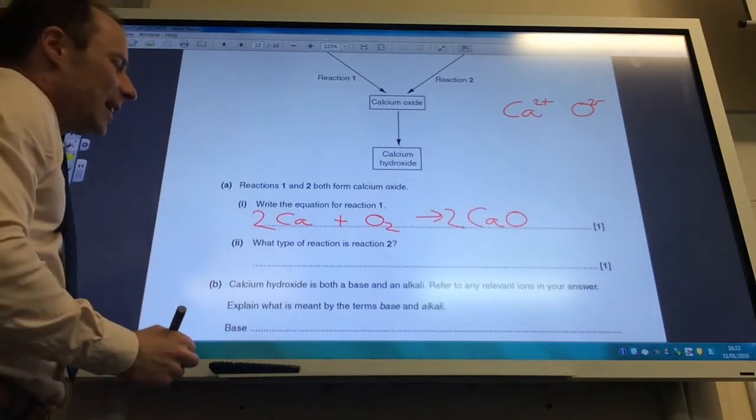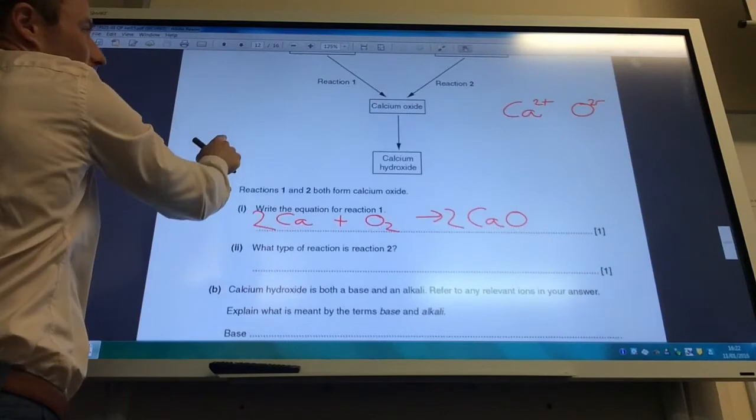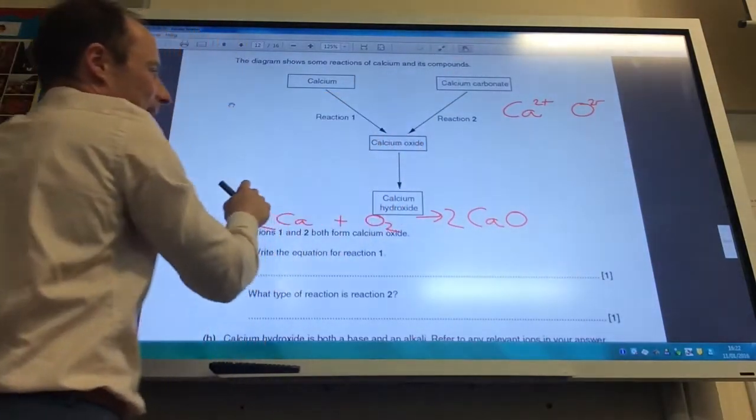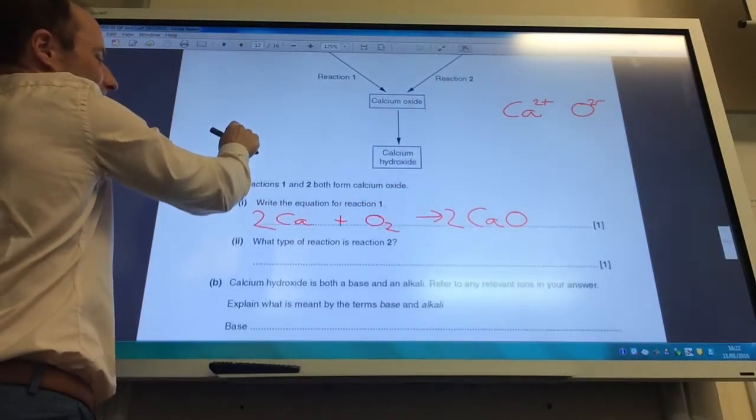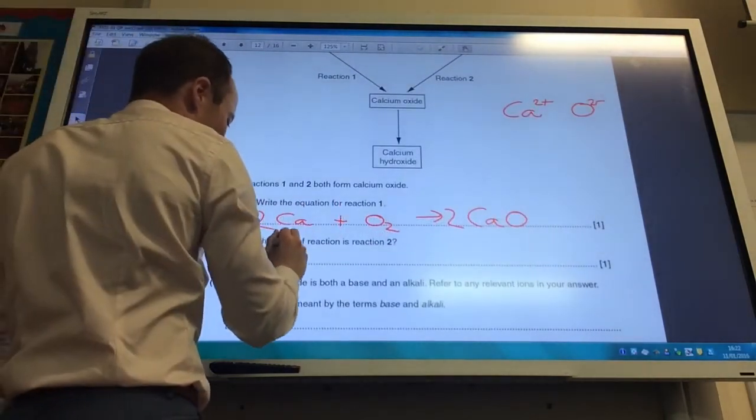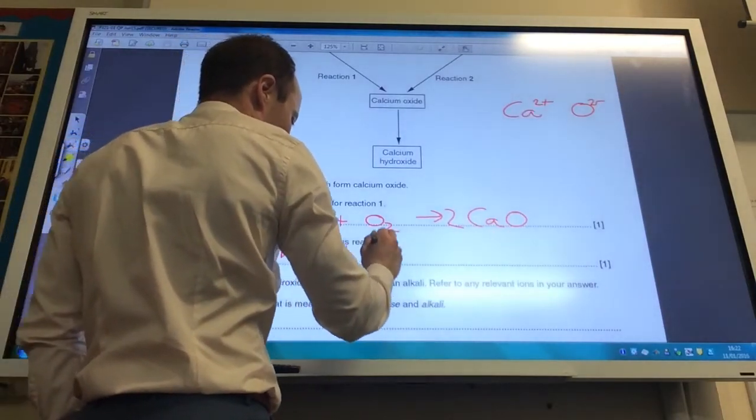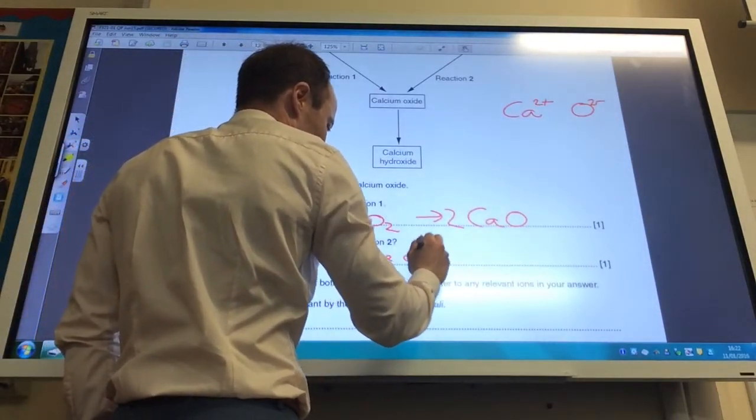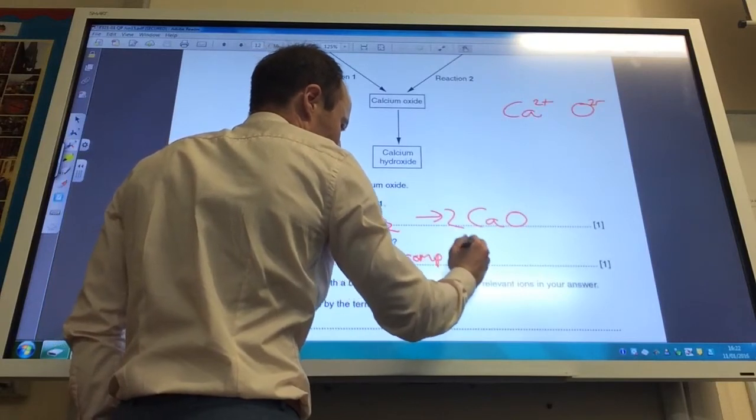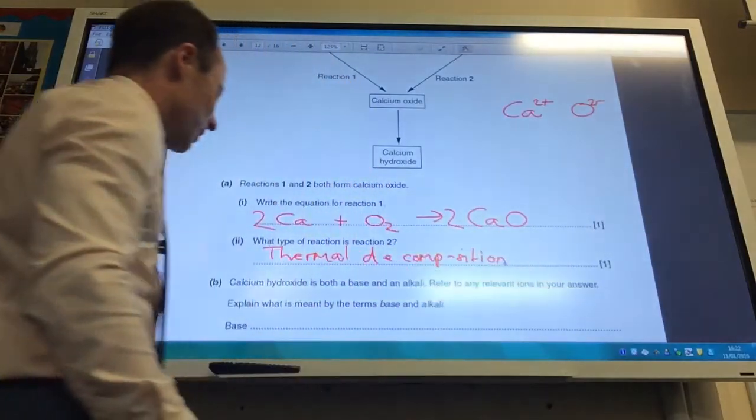What type of reaction is reaction 2? If we go back and have a look at reaction 2, I've got calcium carbonate becoming calcium oxide. And therefore we know that to be thermal decomposition. Like so.